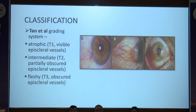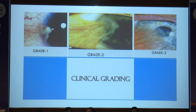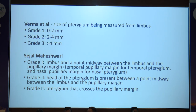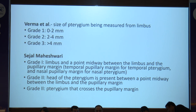Coming next to the classification, there are multiple classification systems, but generally the Tan et al. grading system is used, which is based upon the visibility of the episcleral vessels and the morphology of the pterygium. That is: T1 atrophic, where the episcleral vessels are visible; T2 intermediate, with partially obscured episcleral vessels; and T3 the fleshy ones. Two more classifications: Varma et al. based on the size of the pterygium measured from the limbus, and Sijal Maheshwari based upon the point between the limbus and the head of the pterygium location.